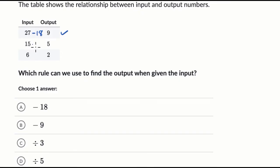But if I took 15 and I were to subtract 18, I definitely don't get five. So I don't even have to go to that third row here. I can rule out choice A.